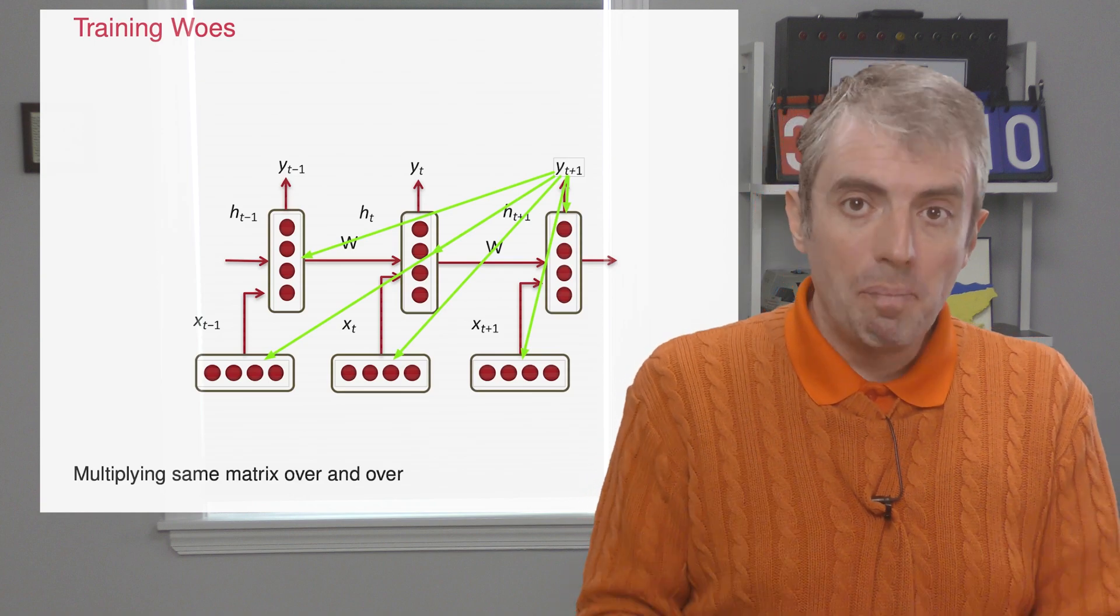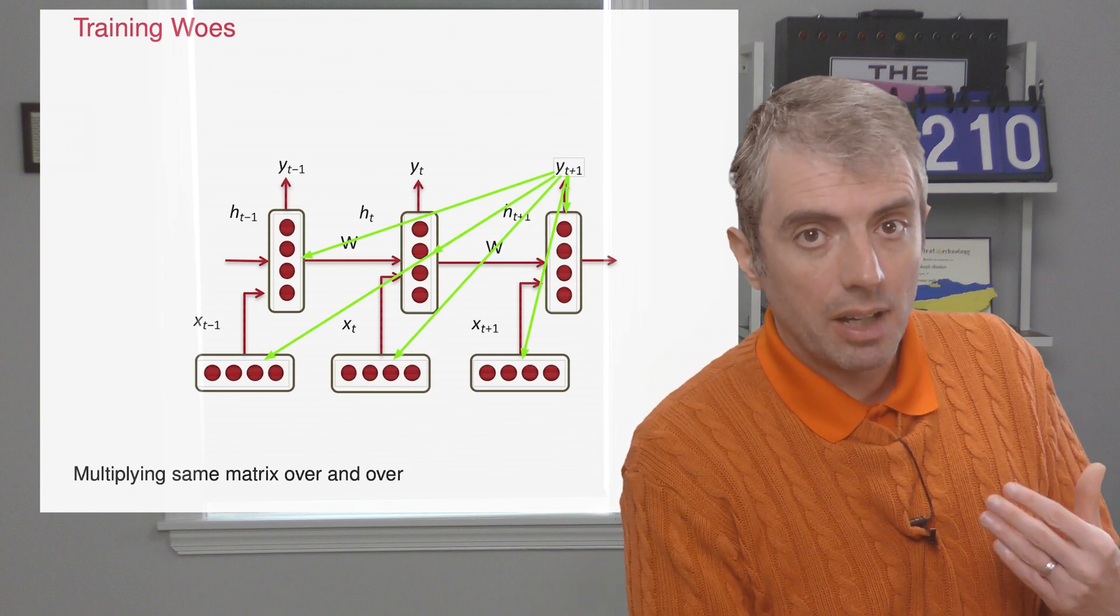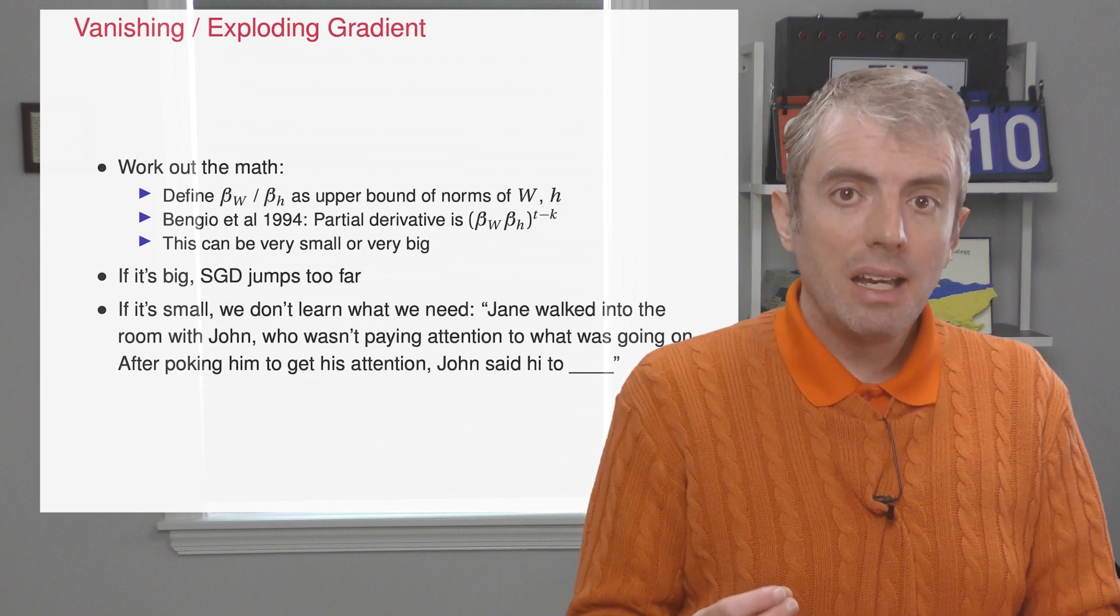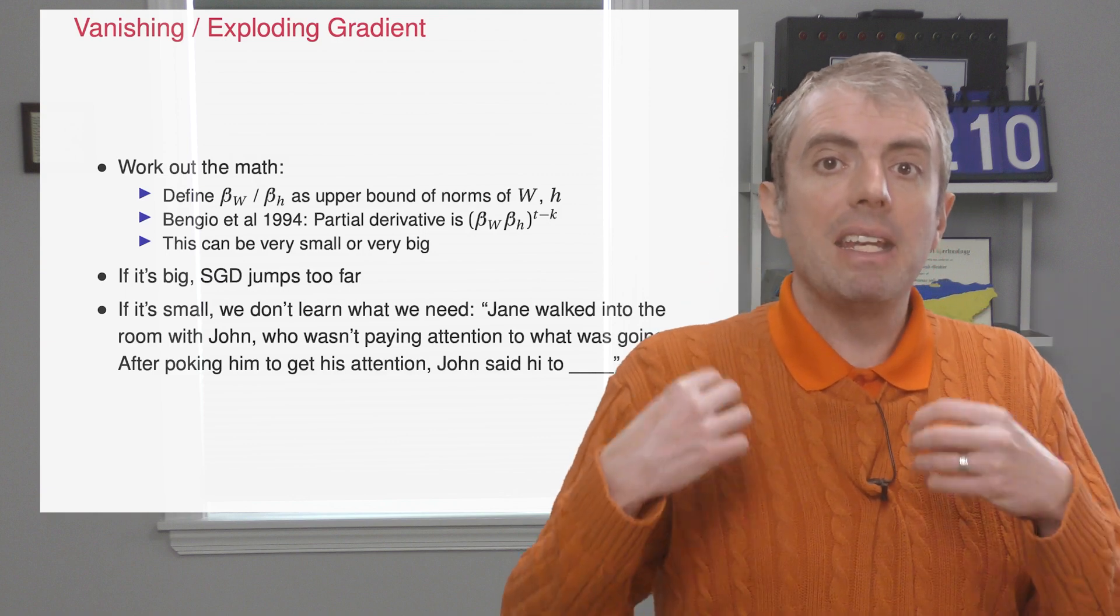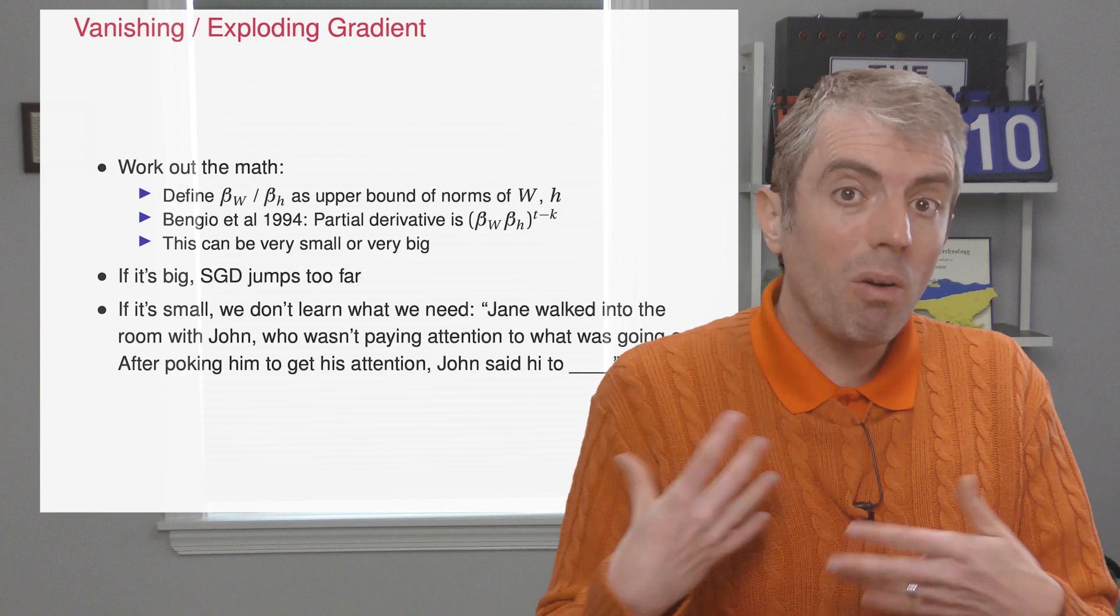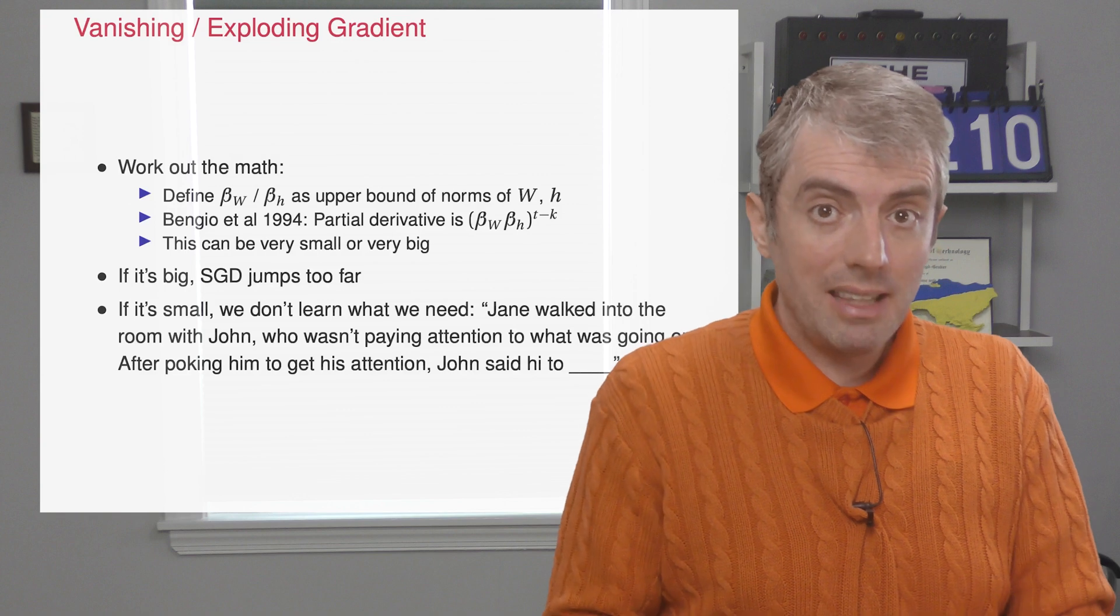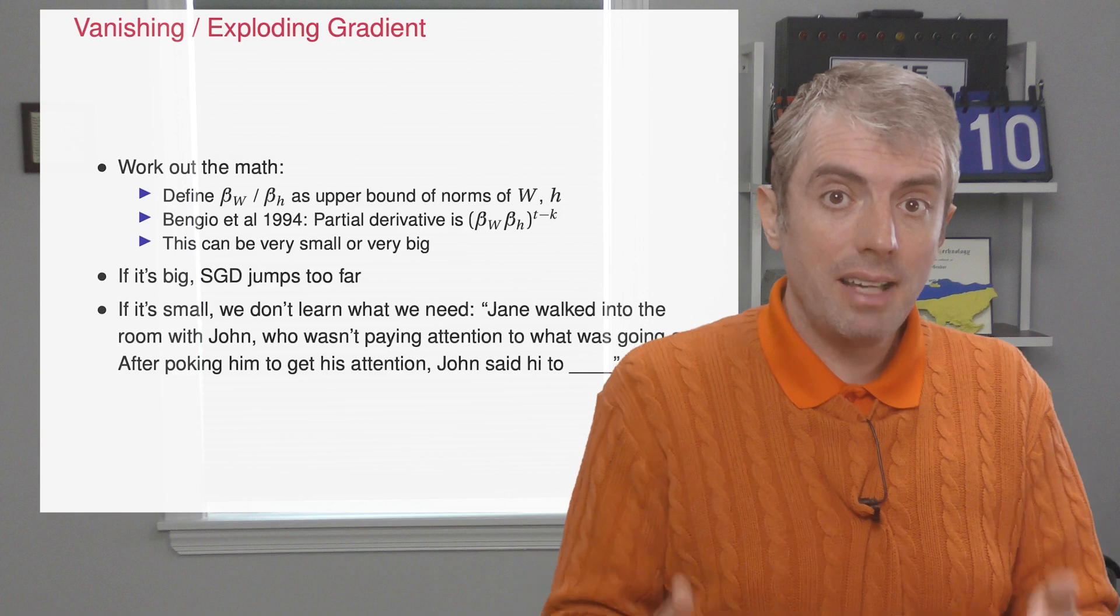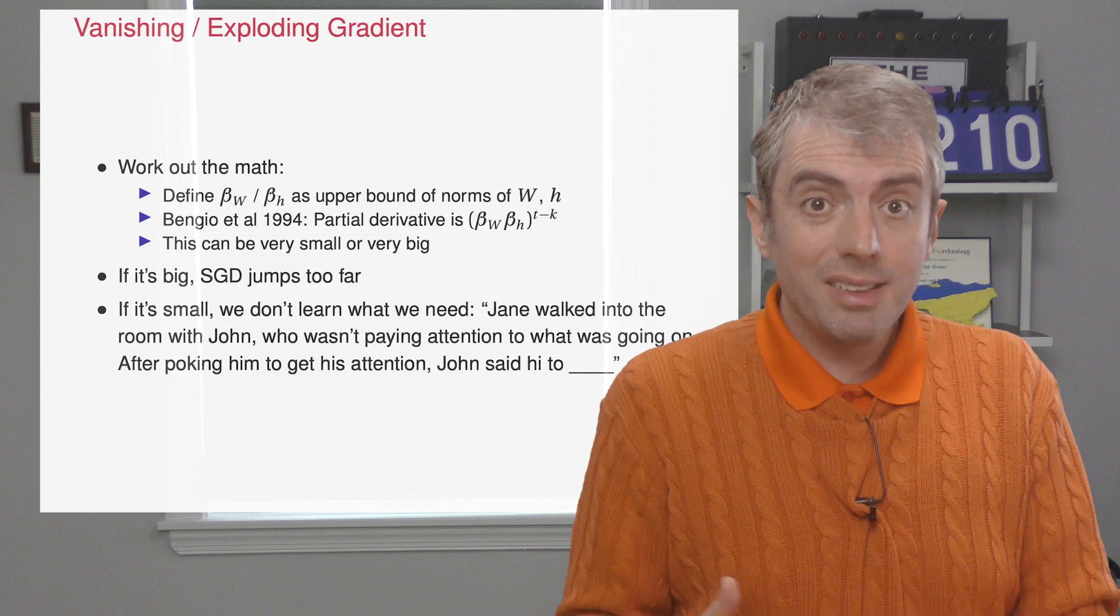Depending on how big the sequences are, and the norms of the underlying matrix W, we can end up with very small or very large gradients because the chain rule is essentially exponentiating our parameter matrix W. I'm not going to go through the full proof here, but hopefully you can get an intuition of why that might happen. And hopefully you can also see that if those gradients are too big or too small, it can screw up classic gradient descent. If your gradients are too big, you'll jump around and not converge. If your gradients are too small, you just won't move at all.